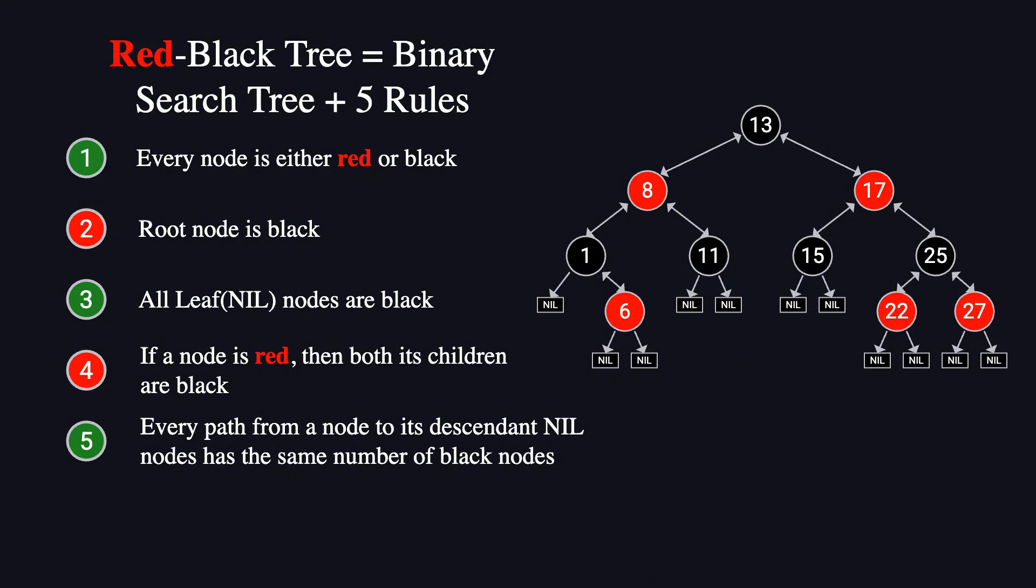To sum it up, inserting a red node can violate at most two rules. The root must be black, and there cannot be two consecutive red nodes. The fixes for these violations are relatively simple.